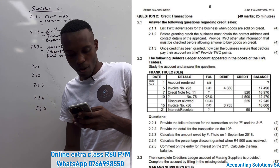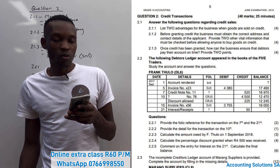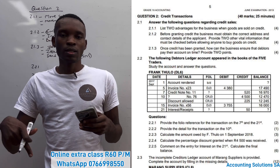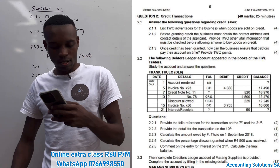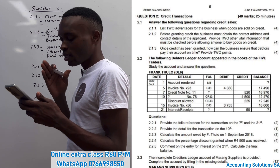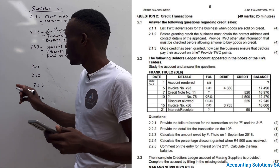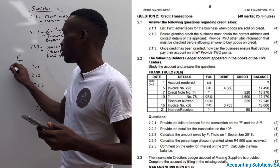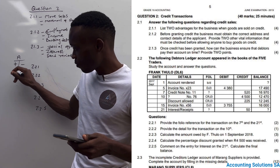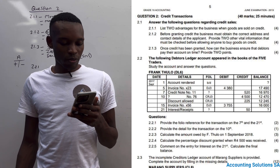Moving to Question 2.2 — the debtors ledger account appearing in the books of Five Traders. A debtor is someone who purchased from us on credit; a creditor is someone we purchased from on credit. Debtors is an asset — it increases on the debit side and decreases on the credit side. The more the debtor owes, the more it increases; when they pay, it decreases.